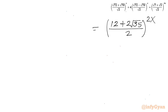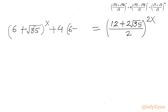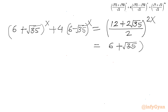The LHS is (6 + √35)^x plus 4·(6 − √35)^x. Now I simplify the RHS: (12 + 2√35)/2 = (6 + √35), so the RHS can be written as (6 + √35)^(2x).